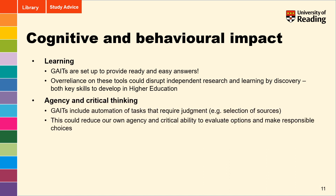We should also consider our agency and critical thinking when using generative AI tools. When generating their responses to our prompts, they will automate tasks for us that should require our own critical judgement, such as the selection of sources. In doing so, this can reduce or limit our own agency over our work, as well as our critical ability to evaluate options and make responsible choices.